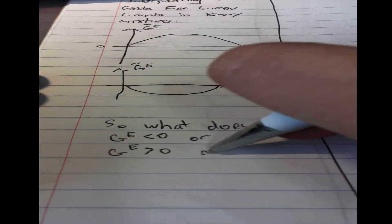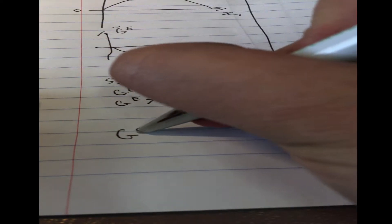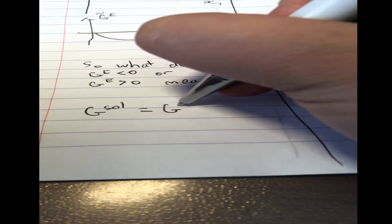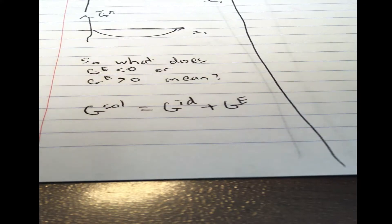So what does it mean to have positive or negative excess Gibbs free energy? What does G_E less than zero or G_E greater than zero mean? We know that the Gibbs free energy of a solution equals the Gibbs free energy of an ideal solution plus the excess Gibbs free energy.